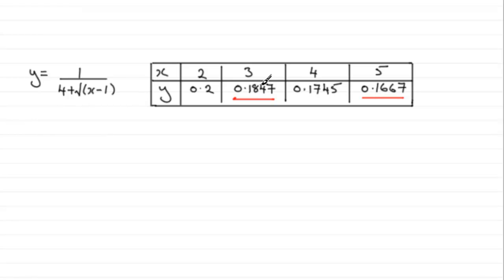I've actually put in the values that you've got to complete for x equals 3 and x equals 5, giving your answer to four decimal places, so you should find that you get these when you substitute 3 and 5 into your equation.